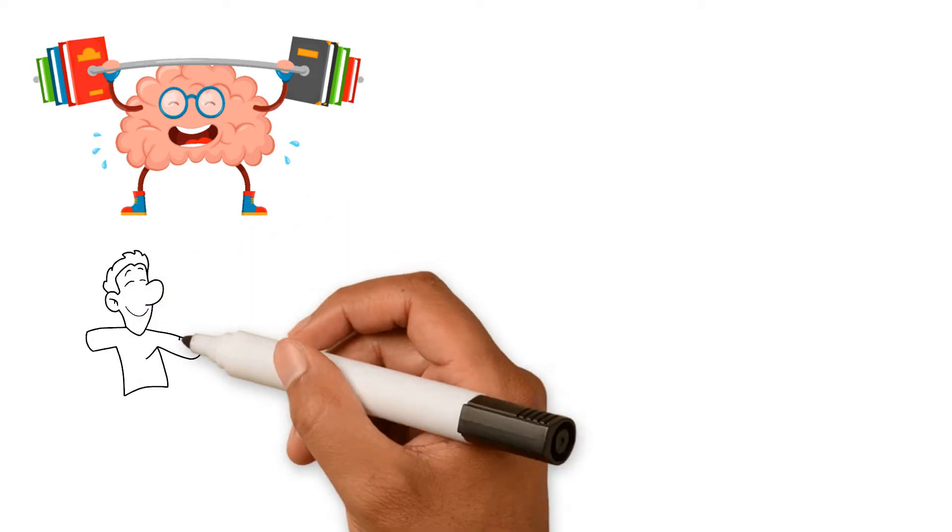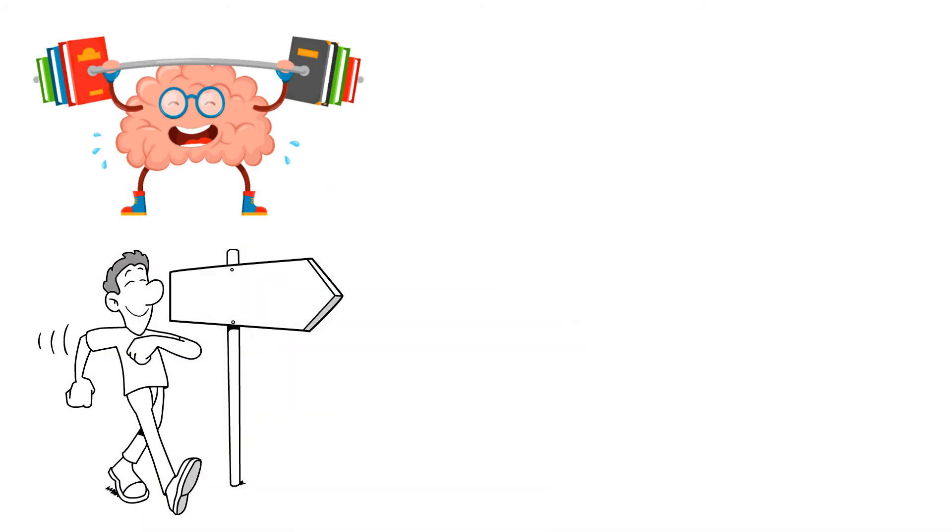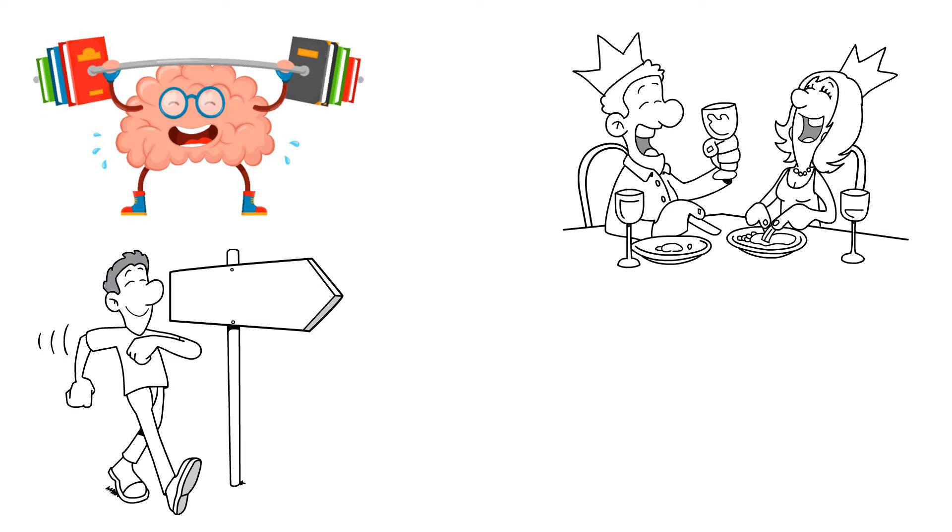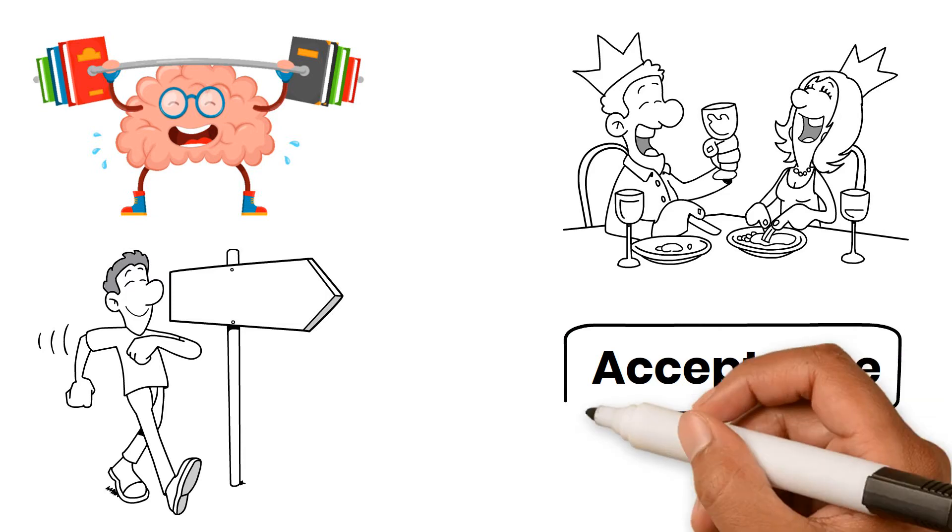Becoming a mentally stronger person is about accepting that the past is the past, and moving forward. Enjoying the present, and the future. Amy Morin says that the first step to moving on from the past is acceptance.